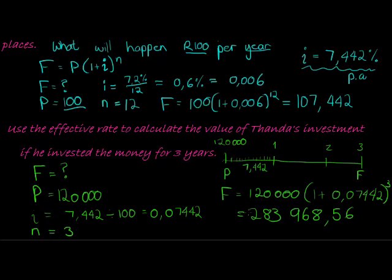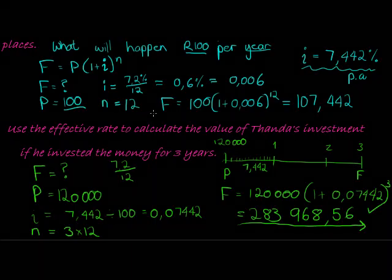148,968.56 - that would be the future value of his investment after three years. You can go and test this: use 7.2 divided by 12 and use n with three times 12, and you will get exactly the same answer. Go and test it. See you in the next video.